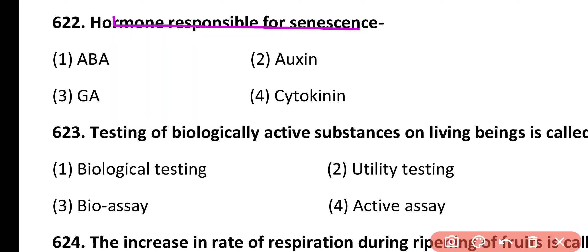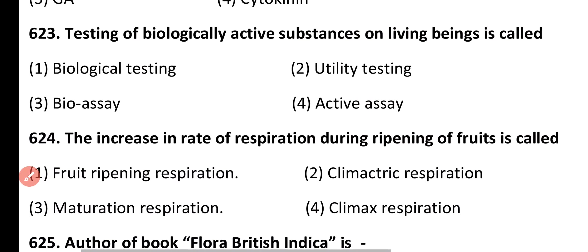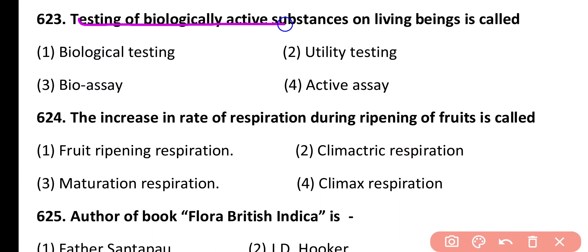Question 622. Hormone responsible for senescence: abscisic acid, auxin, gibberellic acid, cytokinin. Correct answer is option 1. Abscisic acid is responsible for aging or senescence.